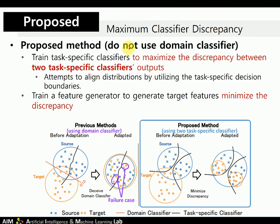In this paper, they propose a new method that does not use domain classifiers, but instead uses two task-specific classifiers to solve unsupervised domain adaptation. They focus on the outputs from two different task-specific classifiers and train the classifiers to maximize the discrepancy between their outputs. By utilizing the classifiers' decision boundaries, they can find target samples that are far from the source domain. They also train a feature generator to minimize the discrepancy, making the generated target features better classified.